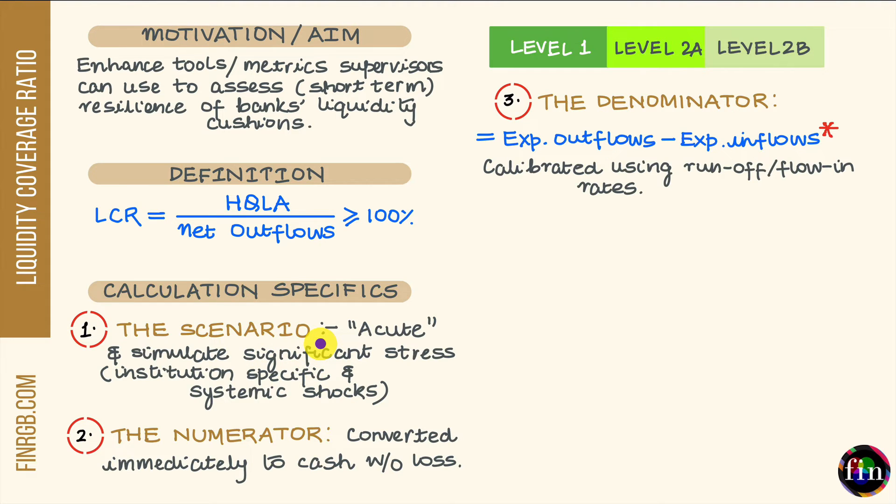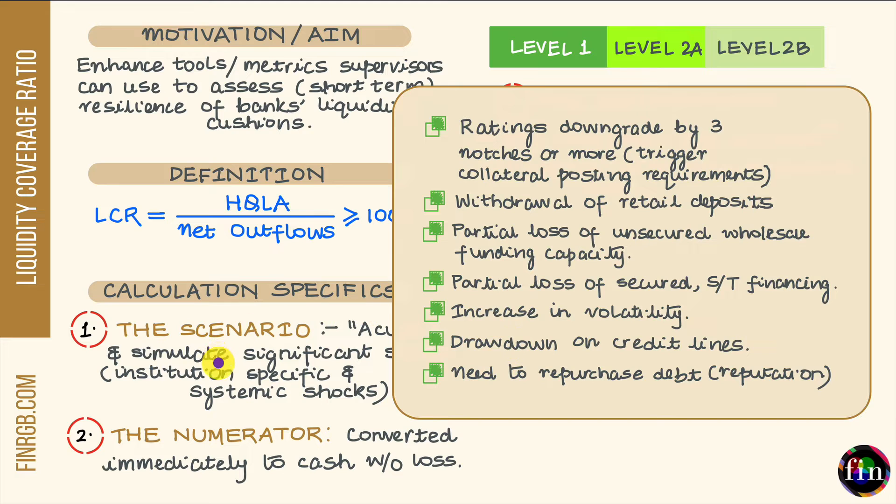A few such specifics have been listed here. In this scenario, we're assuming that our bank undergoes a ratings downgrade by three notches or more. This downgrade is significant enough to trigger collateral posting requirements which may be non-existing at the moment. In this scenario, we're talking about a withdrawal of retail deposits which in normal times are considered to be very stable or sticky.